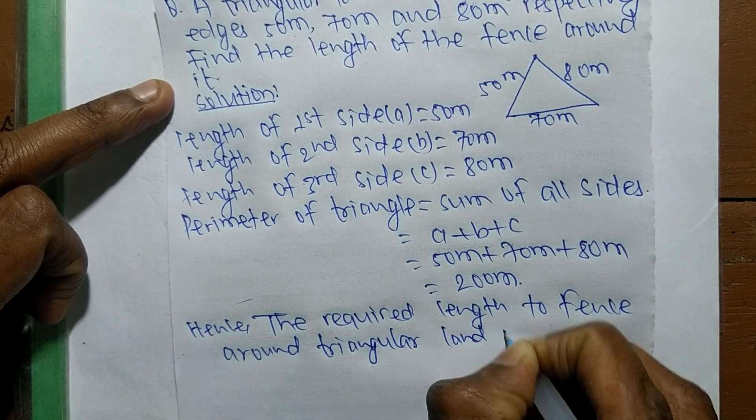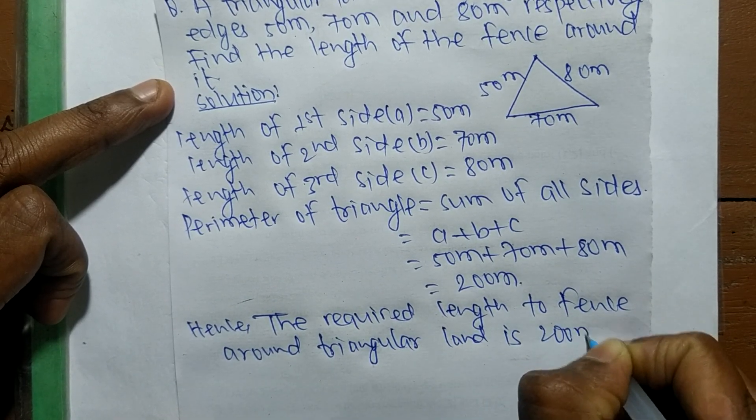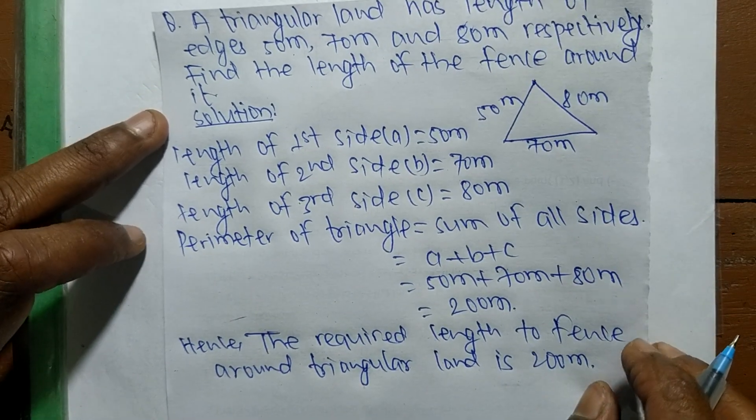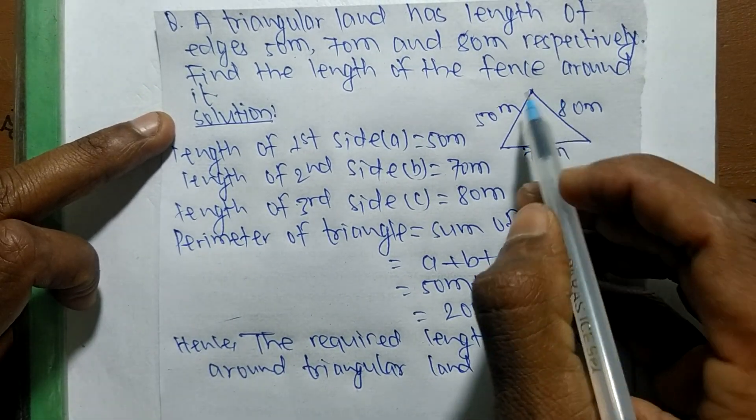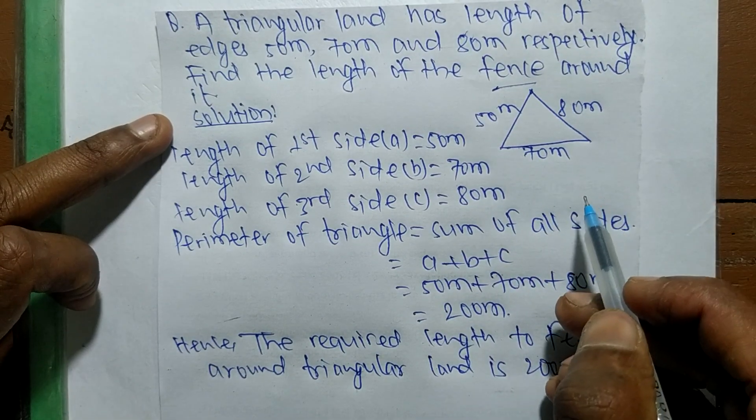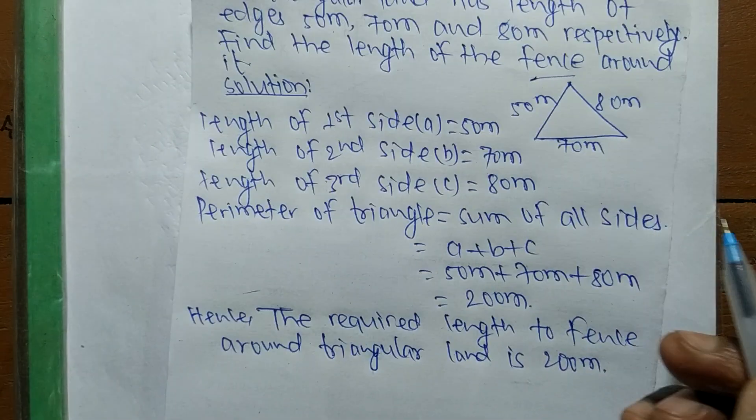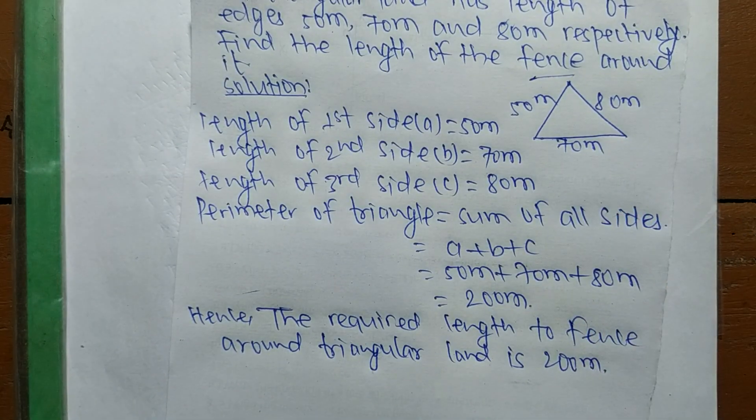the triangular land is 200 meter. In any mathematical question, when there is a fence mentioned, it means we have to find its perimeter. Thanks for watching.